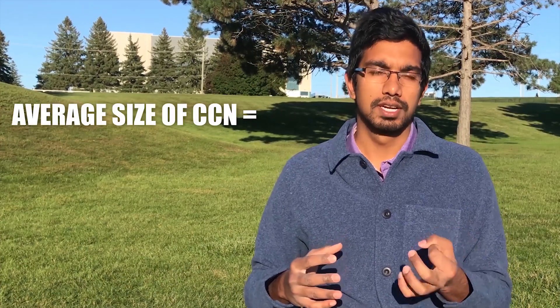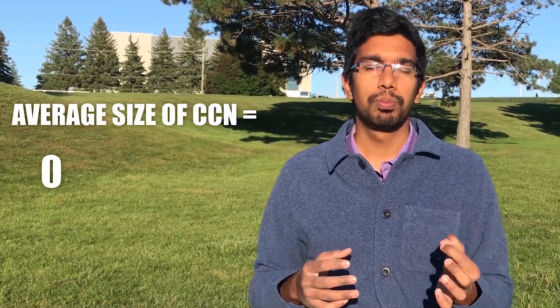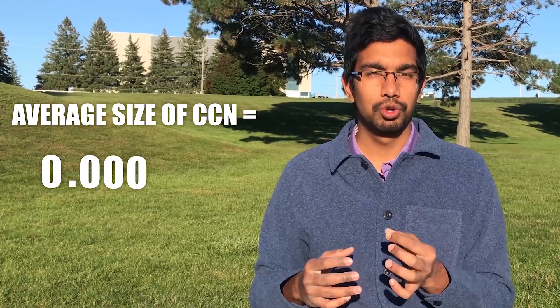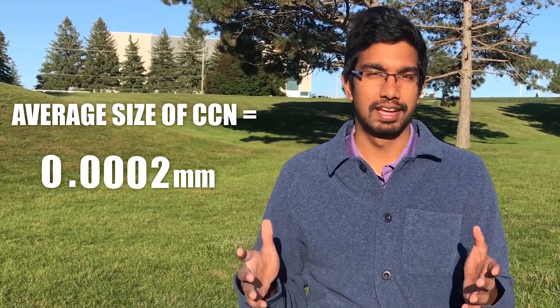We told you that water droplets form around these cloud condensation nuclei. But what we didn't tell you was the size of these CCNs and the size of the water droplets that form around them. On average, the size of a cloud condensation nuclei is 0.0002 mm. That is absolutely tiny.